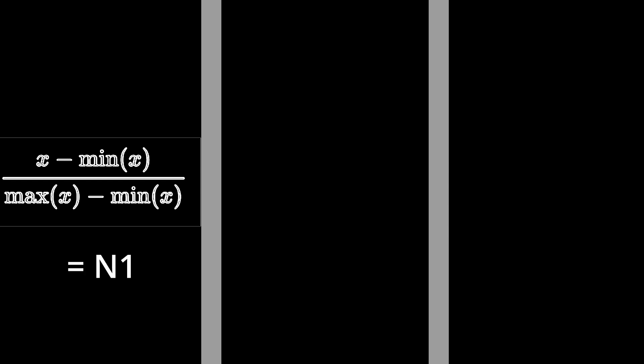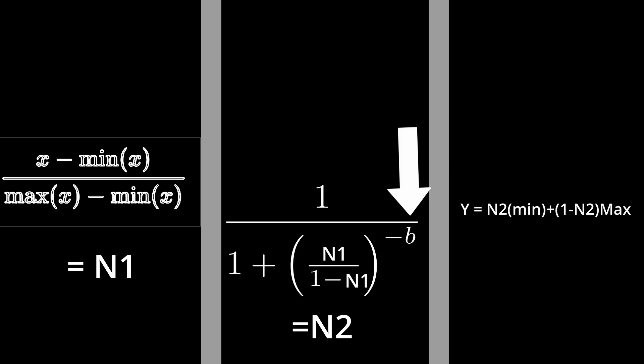How would this look overall? The first equation for getting a normalized value won't change. We'll just rename the output to N1 for normalize value 1. We then put N1 into our S-shaped curve to get N2. Now we just use N2 to work out the damage. If you want to change the curvature, just change this B value. I'd recommend keeping B between 1 and 5, where 1 is a straight line and 5 is a very steep line.